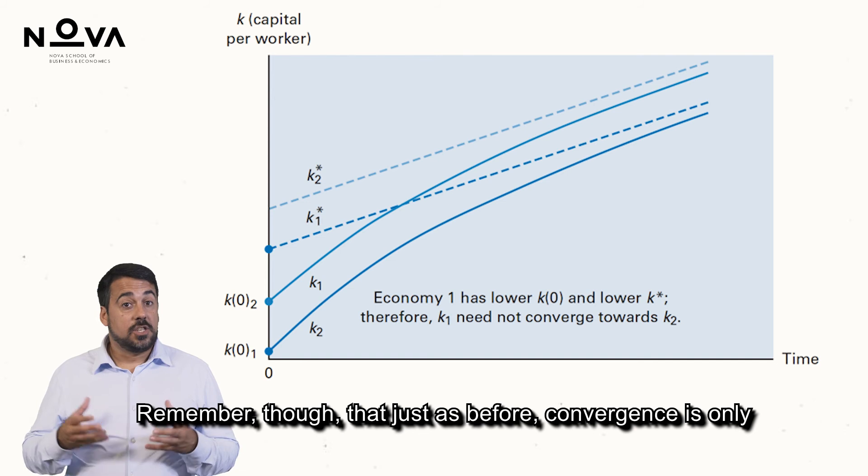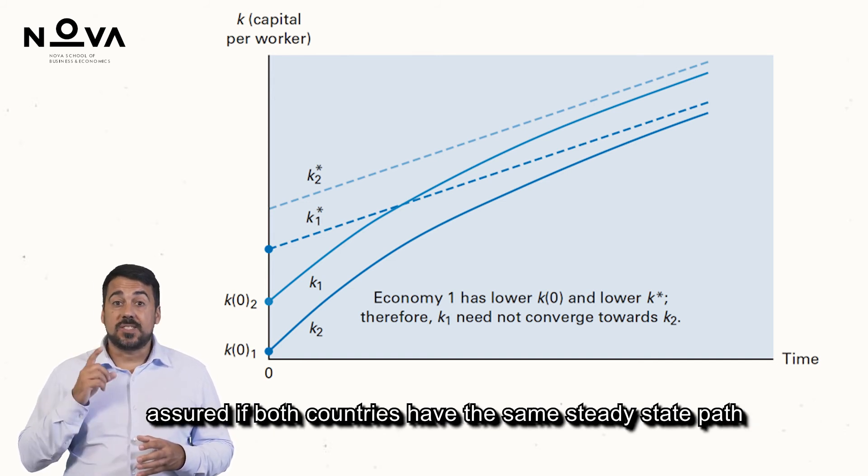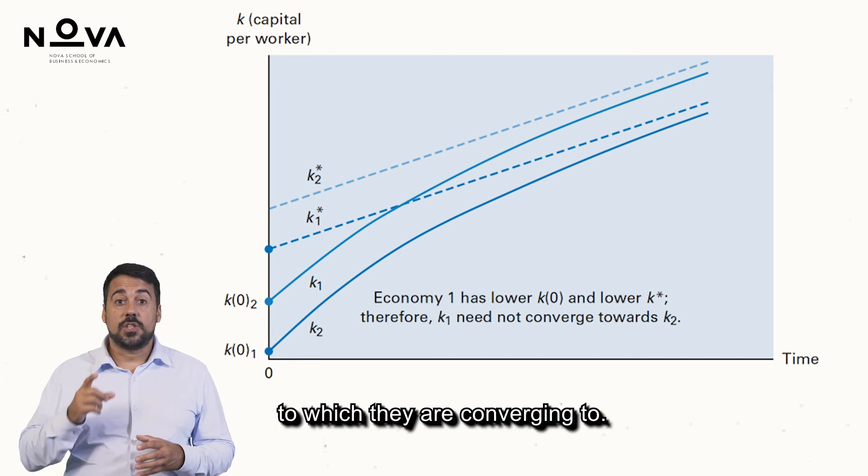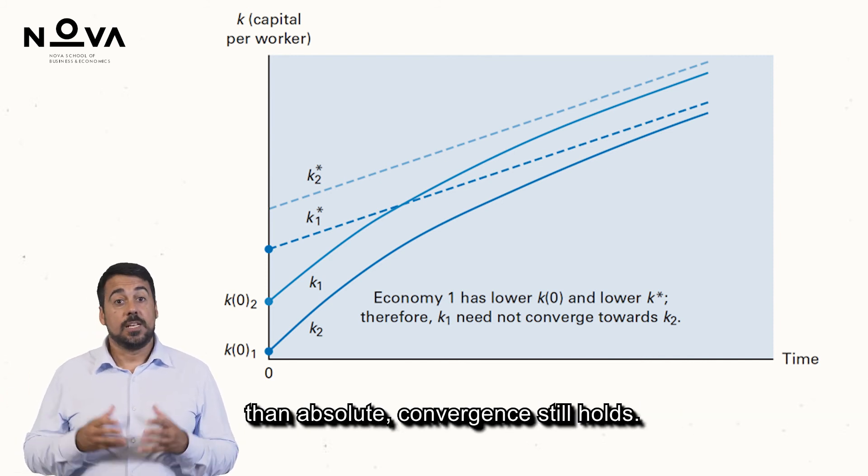Remember though, that just as before, convergence is only assured if both countries have the same steady state path to which they are converging to. So, the result that the Solow model predicts conditional rather than absolute convergence still holds.